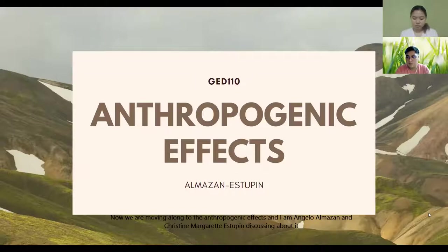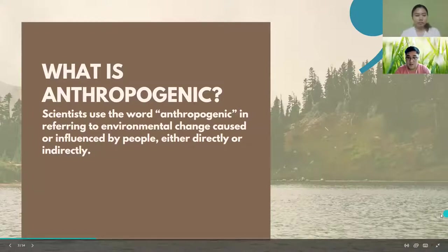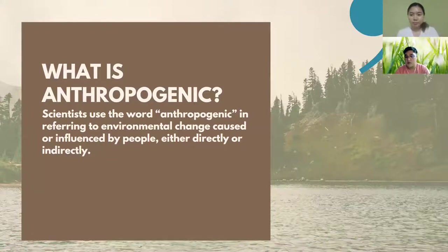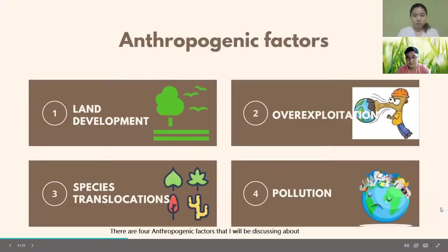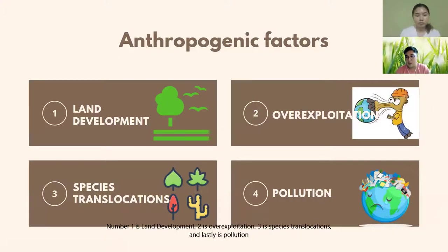Now we are moving on to anthropogenic effects. I am Angelo Luis Almazan with Ms. Christine Margaret Estupin discussing about it. Anthropogenic refers to environmental change caused or influenced by people, either directly or indirectly. There are four anthropogenic factors: number one is land development, two is overexploitation, three is species translocation, and lastly, pollution.